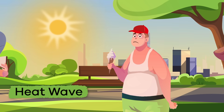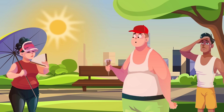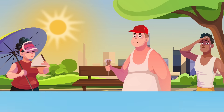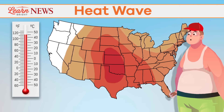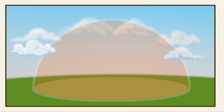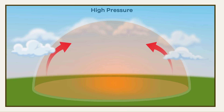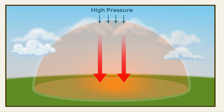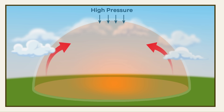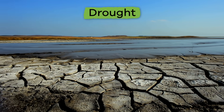Have you ever experienced a heat wave? A heat wave isn't your average hot summer day. Instead, it means that there are higher than normal temperatures in a region, which happens when high pressure in the Earth's atmosphere builds up and holds hot air on the Earth's surface. This decreases the chance of rain, which can lead to another natural disaster we have already discussed – drought.